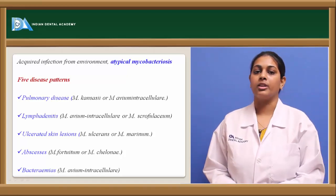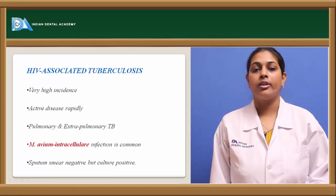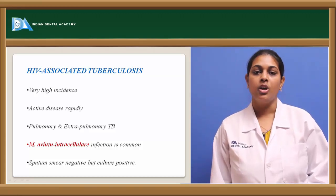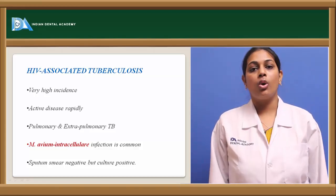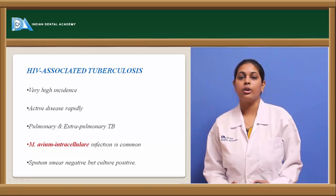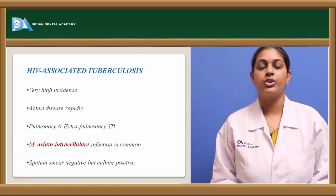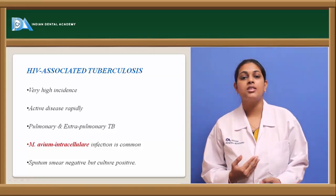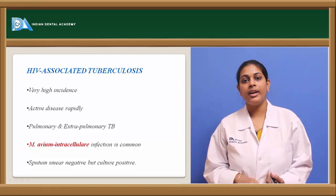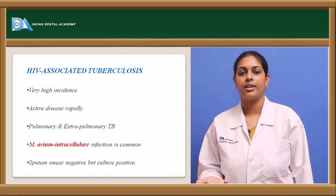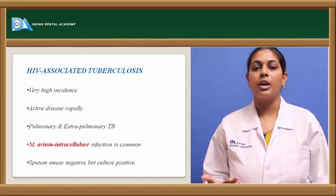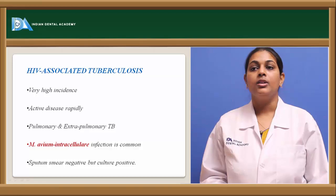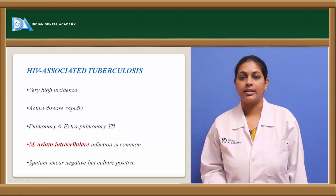Coming to the association of tuberculosis with HIV or immunocompromised patients: since tuberculosis is directly related to the host immune defense system, and HIV results in acquired immunodeficiency syndrome, the patient becomes immunocompromised because of decreased CD4 T lymphocytes. These CD4 T lymphocytes are the active cells which help fight against foreign bodies. In HIV patients, CD4 T lymphocytes are decreased in number, allowing bacteria to grow because of lack of these cells.